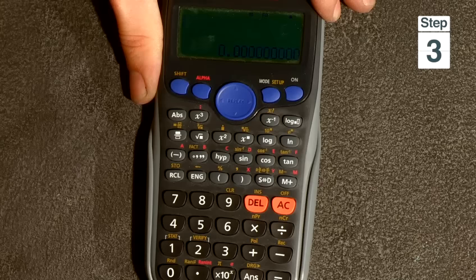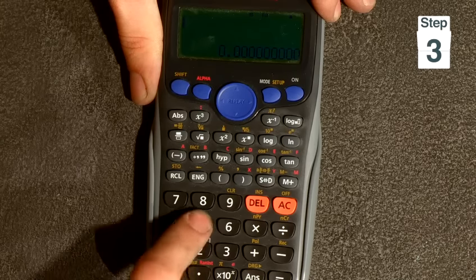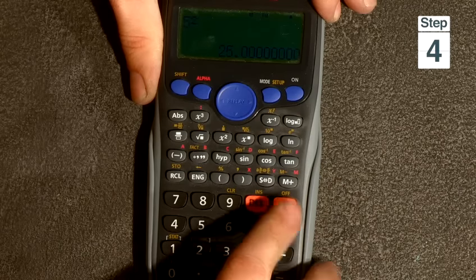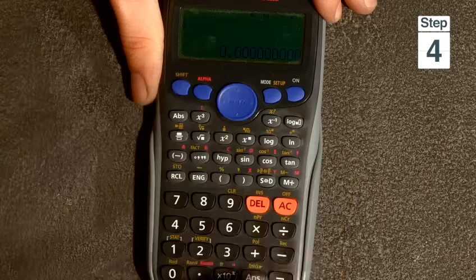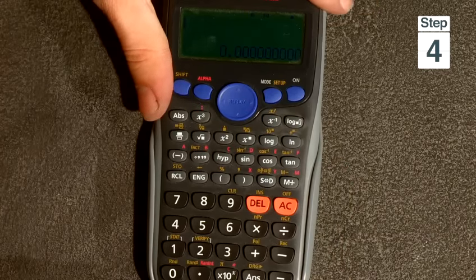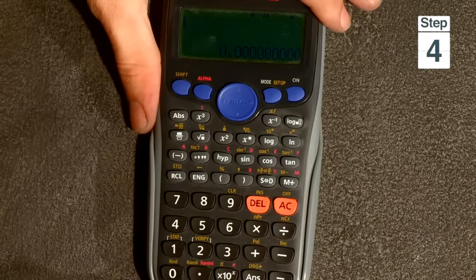If you wanted to take a number and square it, you would do, say, 5 squared equals 25. Another really useful function of these scientific calculators is the answer button. This is probably the most useful part of the calculator.